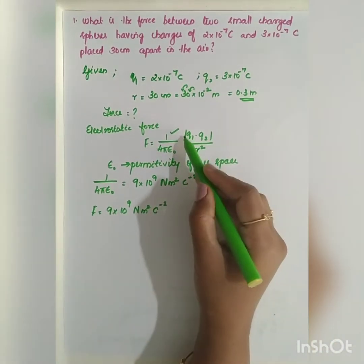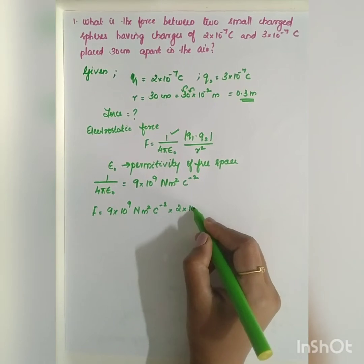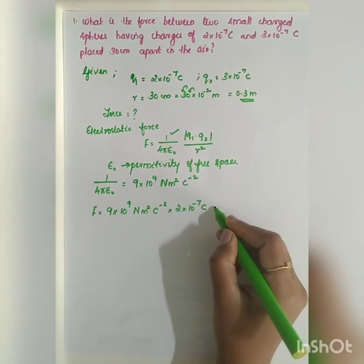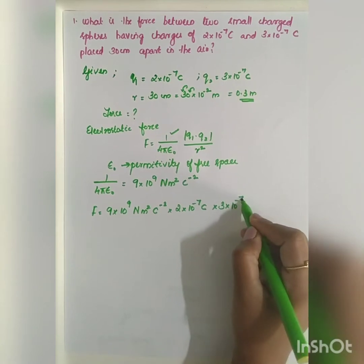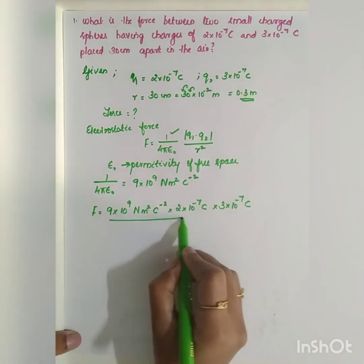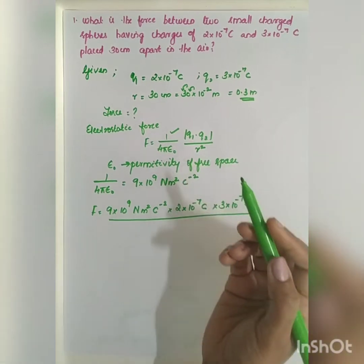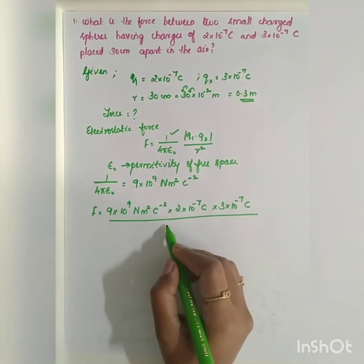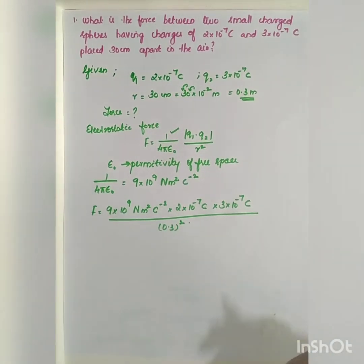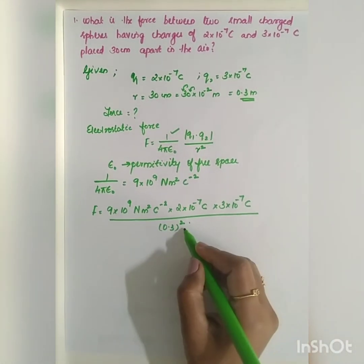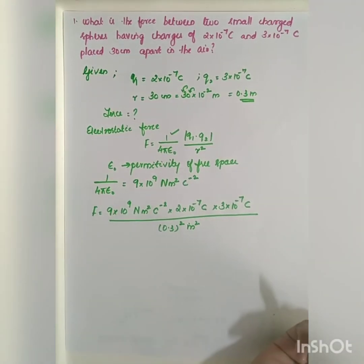Now substituting in the formula — taking only the magnitudes of the charges — we get: F = 9×10⁹ N·m²·C⁻², multiplied by Q1 = 2×10⁻⁷ coulomb and Q2 = 3×10⁻⁷ coulomb, divided by R² = (0.3)² meter squared.